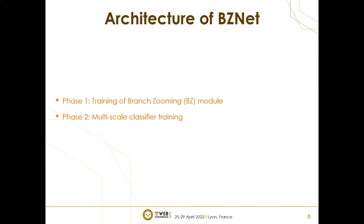How we detect these low-quality deepfakes is explained in two phases. The first phase is training the Branch Zooming Module, which tries to enhance low-quality images. The second phase uses those enhanced images — we will have five different scale images, and all five scales will be passed through a single classifier. That is why we call it multi-scale classifier training.